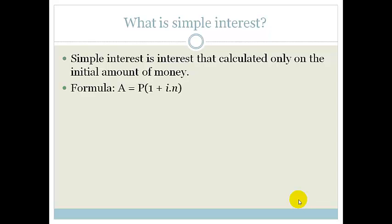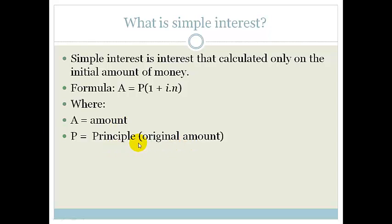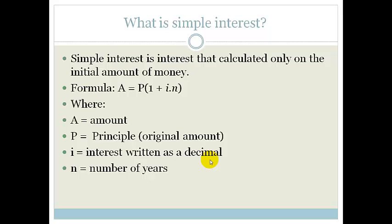The formula for simple interest is A equals P times 1 plus I times N, where your A is your amount. In other words, that's the total amount of money that you're going to owe the bank after several months. P is the principal, so that's the original amount of money that you loan. I is the interest and it's always written as a decimal. So for example, 10% would be 0.1 because we go 10 divided by 100 to get it into a decimal. And N is the number of years. In these simple examples, we'll be talking only about payments per year or interest per year. But if you get to more complicated examples where the interest is calculated per month or per day, the N is basically the number of times you would pay interest.